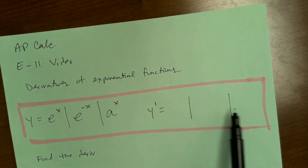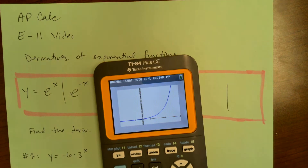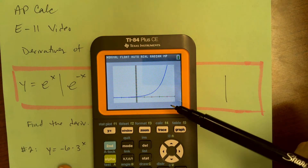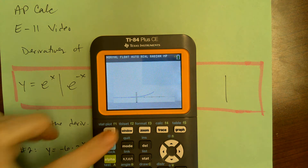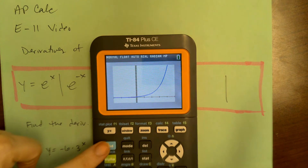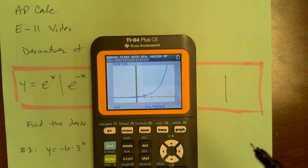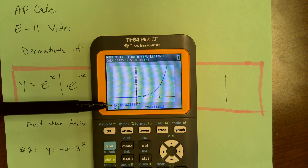In each of these cases, we're going to give a formula for y prime. Starting with e to the x, I want to do a little demonstration. I've graphed e to the x on the calculator, and you can calculate the derivative of a function. Going to 2nd calc, number 6 gives the derivative — dy/dx gives the slope of the tangent line at that point.